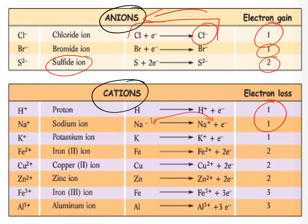Fe²⁺ (ferrous ion): Fe loses two electrons to become Fe²⁺. Copper ion Cu²⁺: Cu loses two electrons to become Cu²⁺. Zinc ion: loses two electrons to become Zn²⁺. Fe³⁺ (ferric ion): loses three electrons. Aluminum ion Al³⁺: loses three electrons to become Al³⁺.